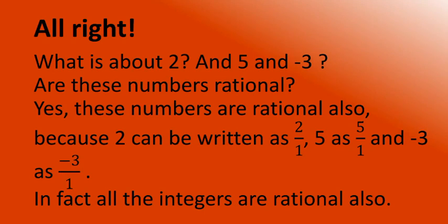What about 2, 5, and minus 3? Are these numbers rational? Yes, these numbers are rational also, because 2 can be written as 2/1, 5 as 5/1, and minus 3 as minus 3/1. In fact, all integers are rational numbers.